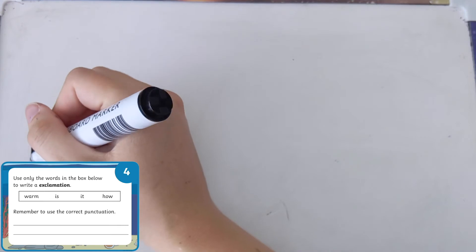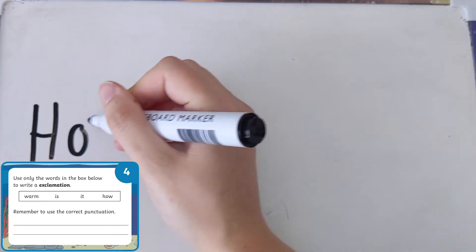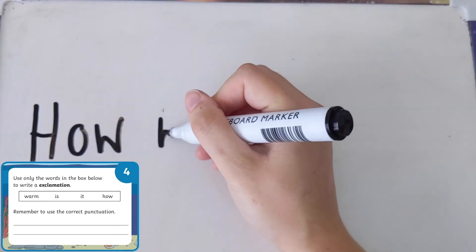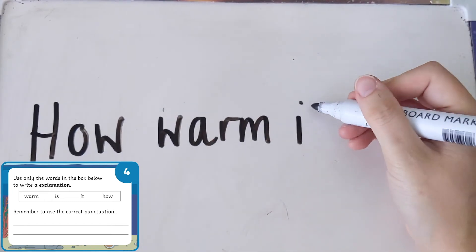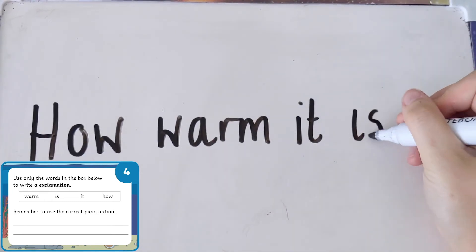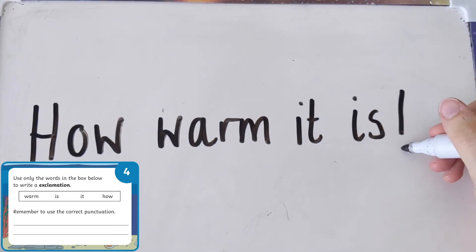An exclamation sentence must end with an exclamation mark, but this type of sentence must also start with either what or how. For example, how warm it is or what a beautiful day. This is a specific sentence type, rather than sentences which can be made more powerful using an exclamation mark as a piece of punctuation.